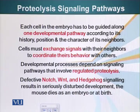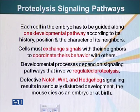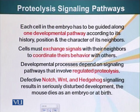Each cell in the embryo has to be guided along one developmental pathway according to its history, position, and character of its neighbors. Life begins with a single fertilized egg. This egg has to divide and divide — not only increasing the number of cells, but the cells have to be guided along specific developmental pathways. Some cells have to become muscle cells, others nerve cells, others skin cells, and so on.